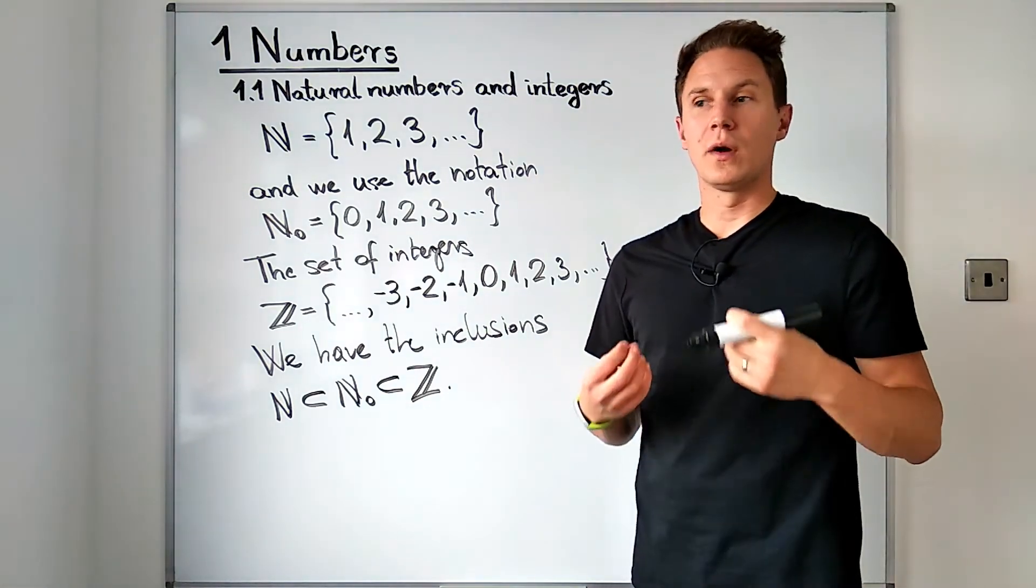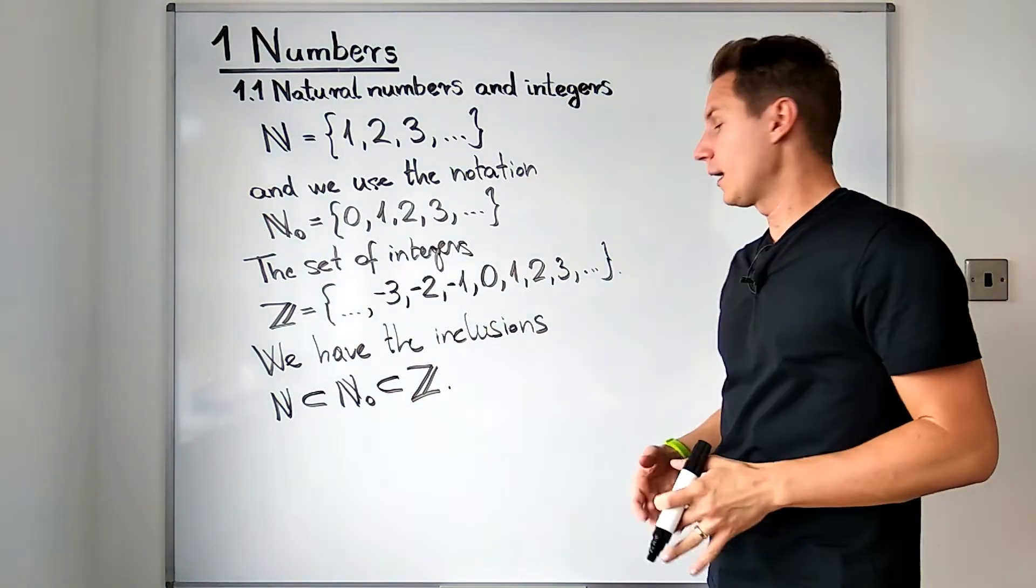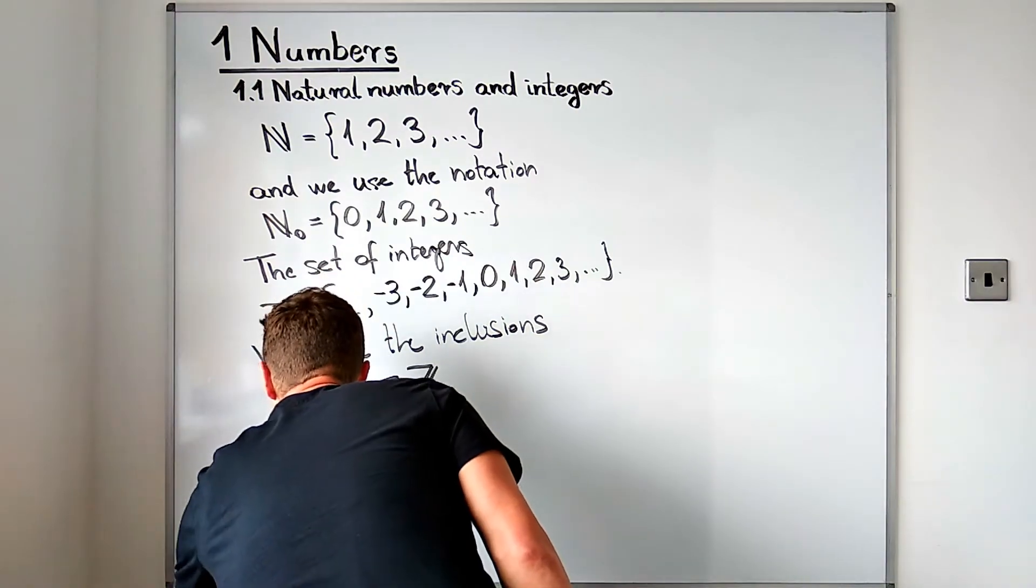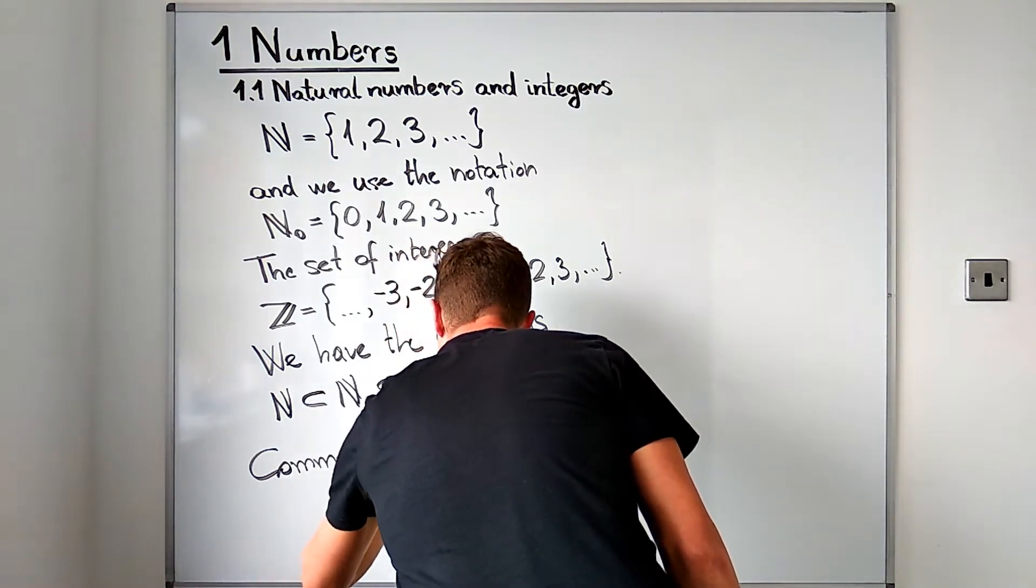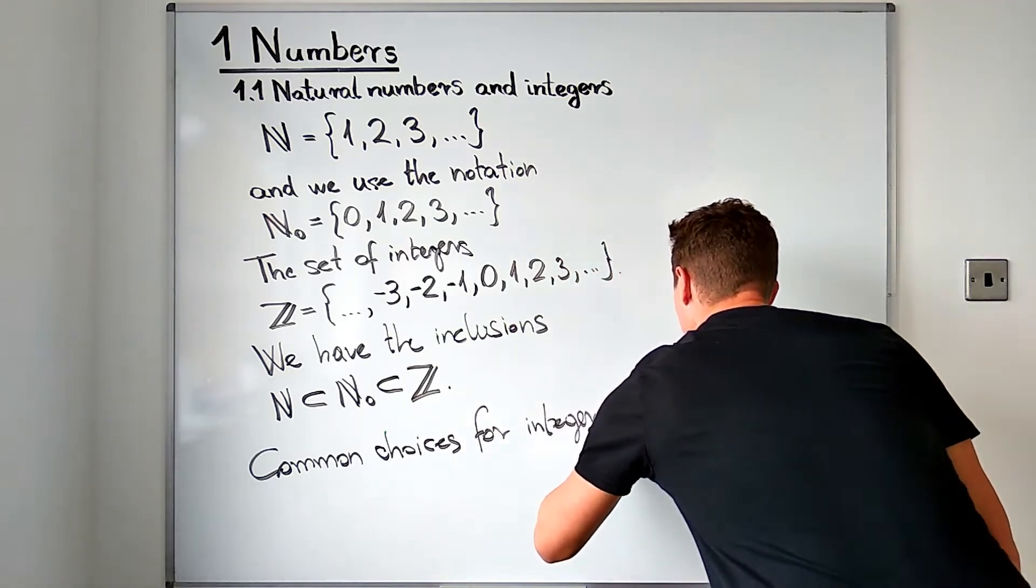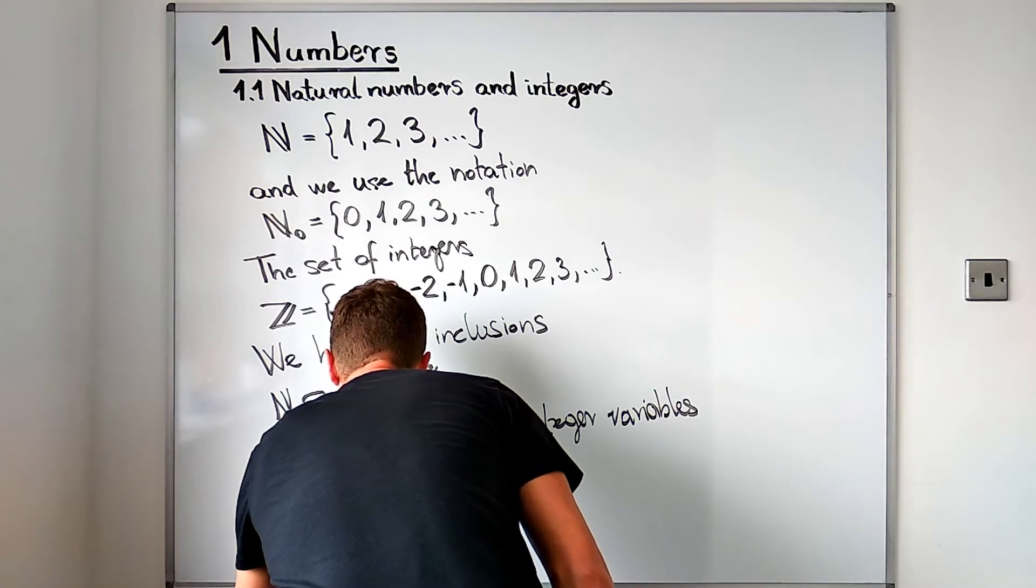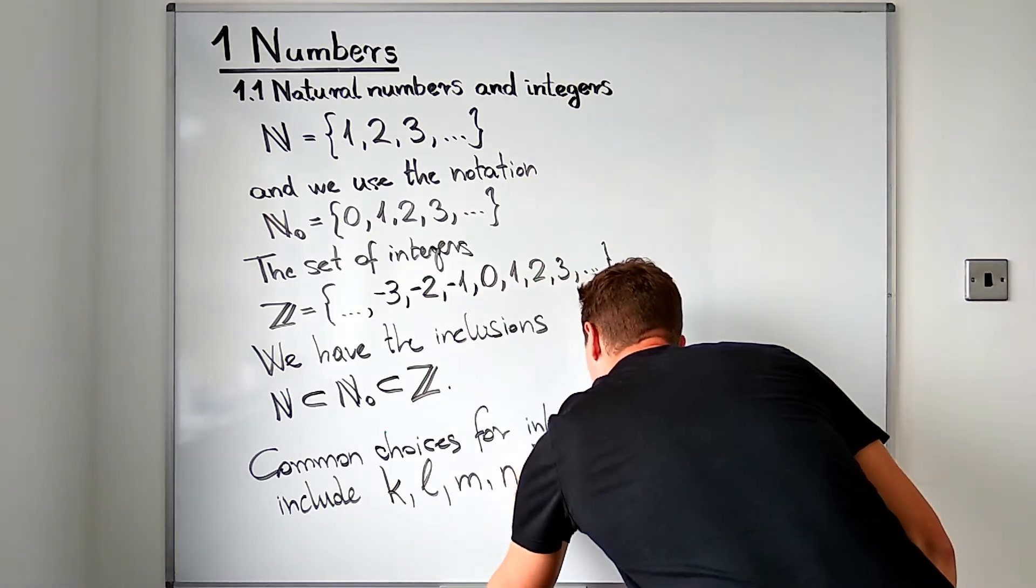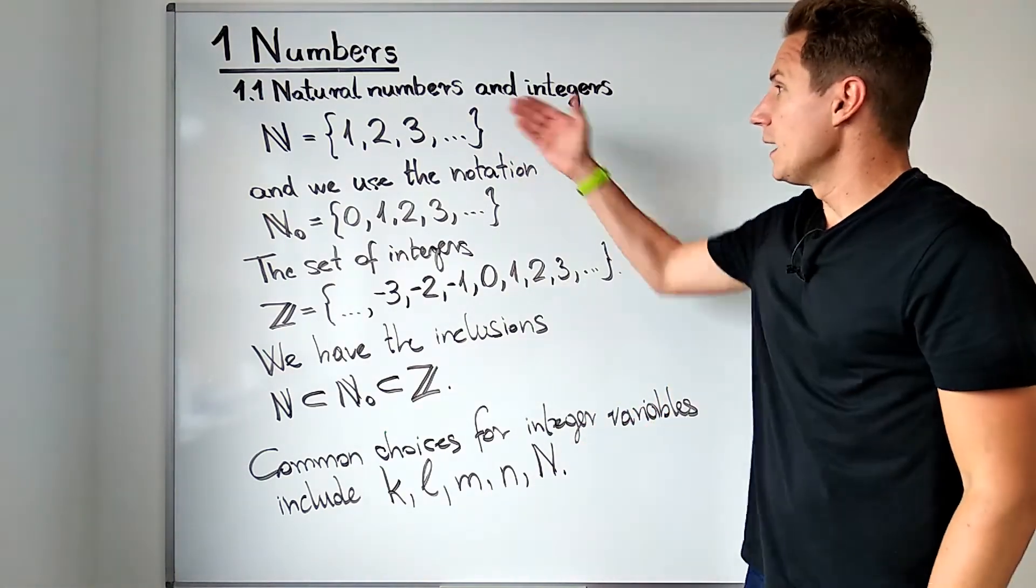And finally let me just remind you of the fact that when we want to refer to an integer without specifying which one we are talking about, we use a letter, a symbol to stand for an unspecified integer. Common choices for integer variables in this module include the letters k, l, m, little n and capital N. So we will use these letters to refer to an integer or a natural number without specifying which one.